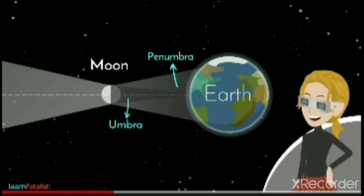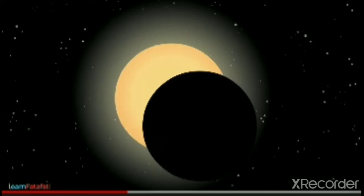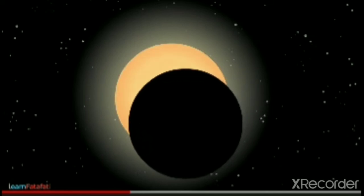If you stand in the penumbra region and try to see the solar eclipse, you will see that the sun is not completely covered by the moon. That is called a partial solar eclipse.